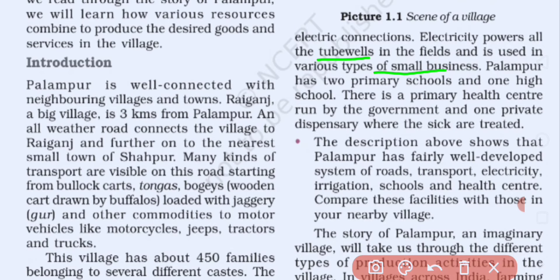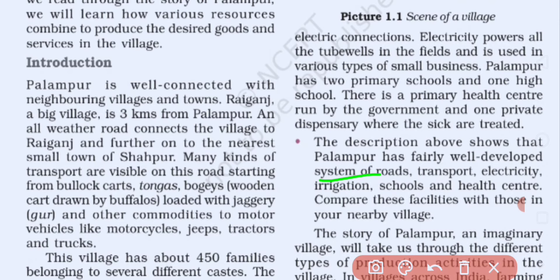Palampur has two primary schools, one high school, one health centre run by the government, and one private dispensary. To summarize, Palampur is a developed village with a system of roads, transport, electricity, irrigation, schools, and a health centre, and the people carry out different activities for production and earning their livelihood.